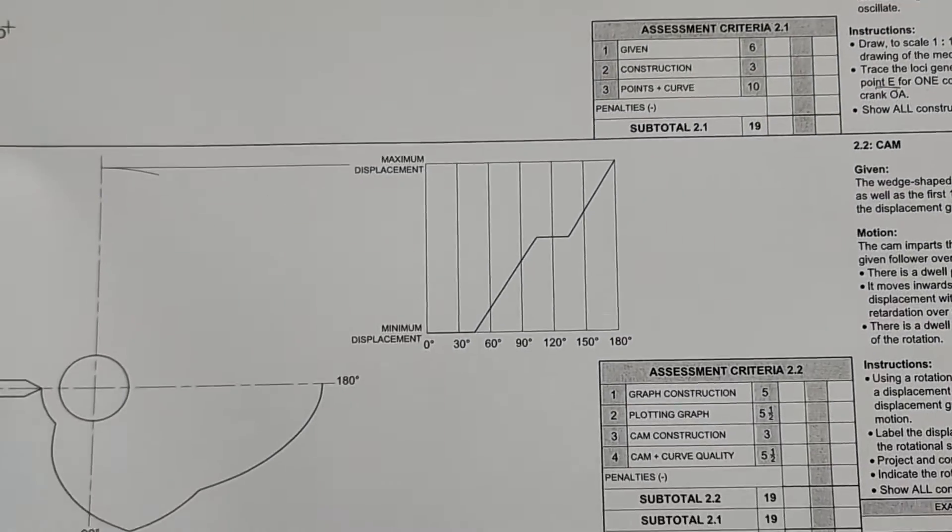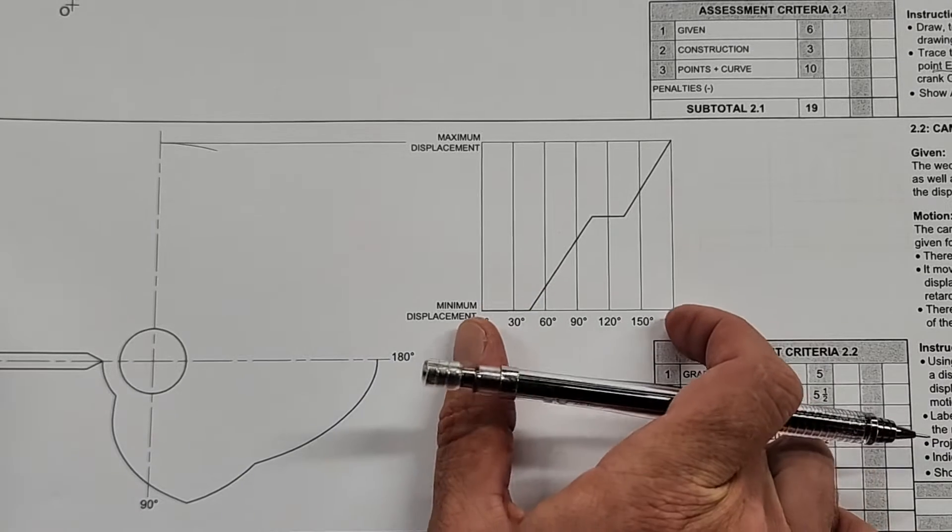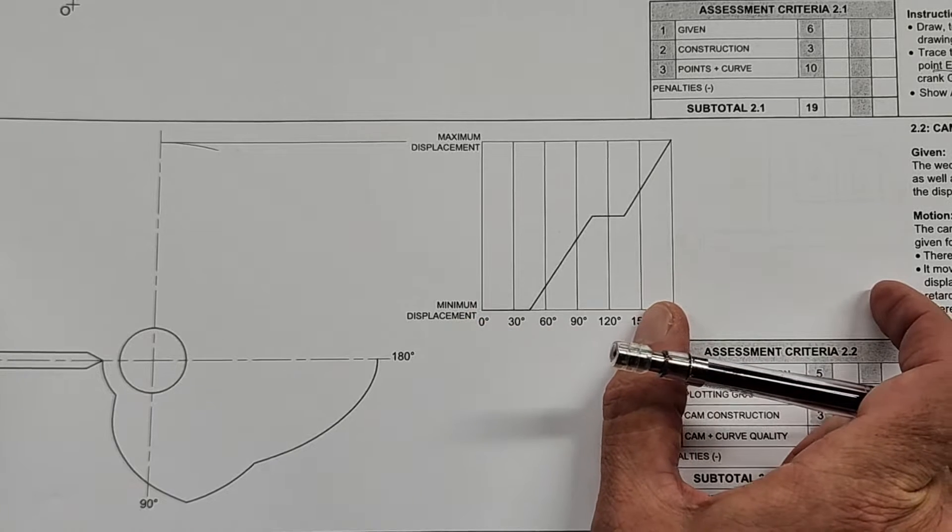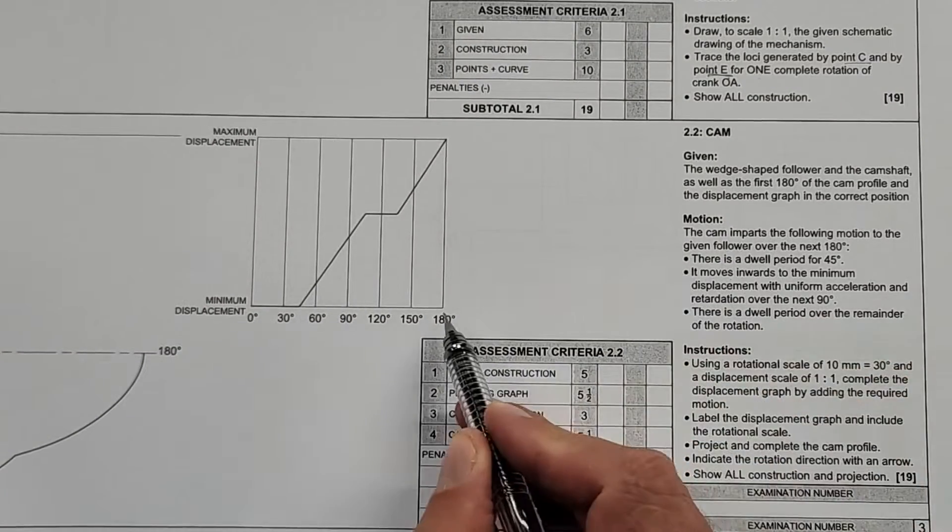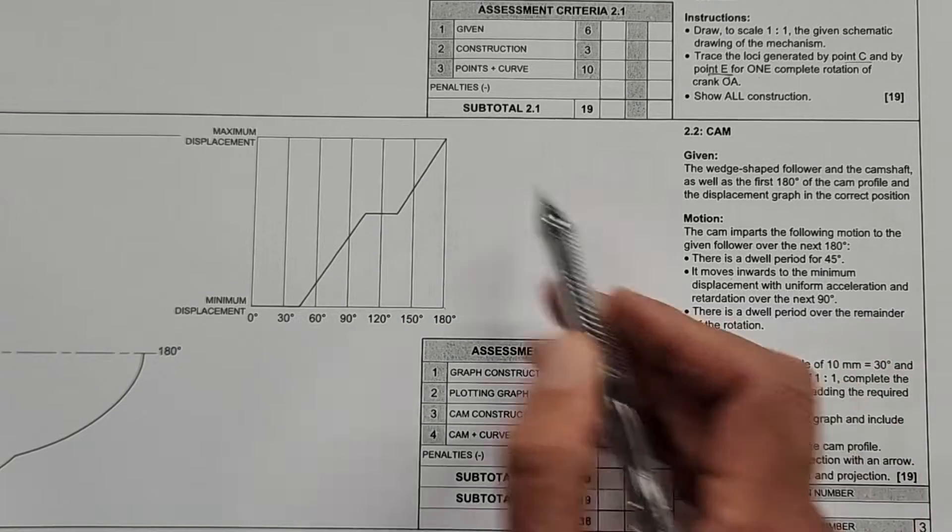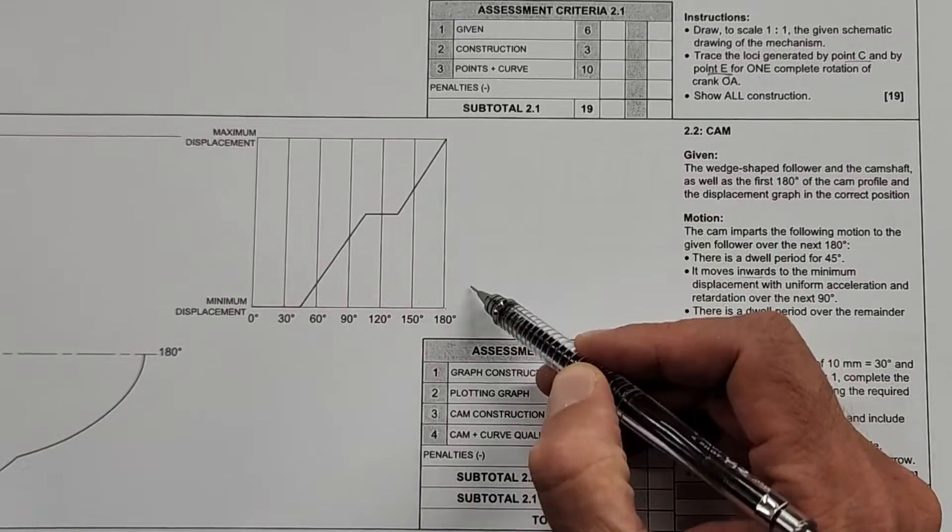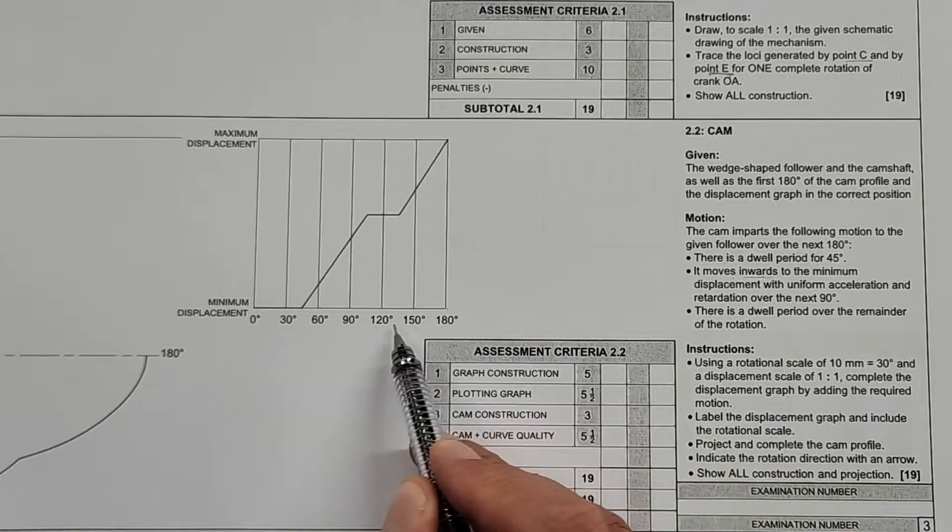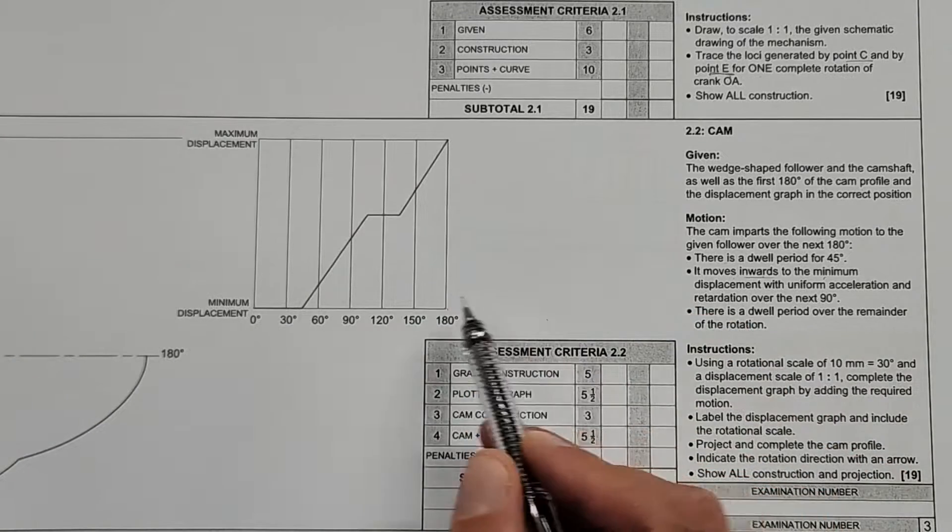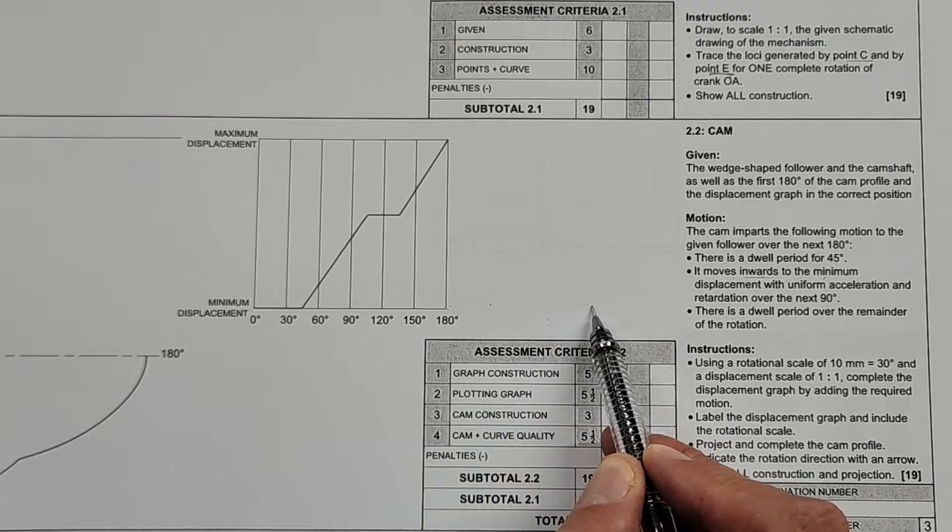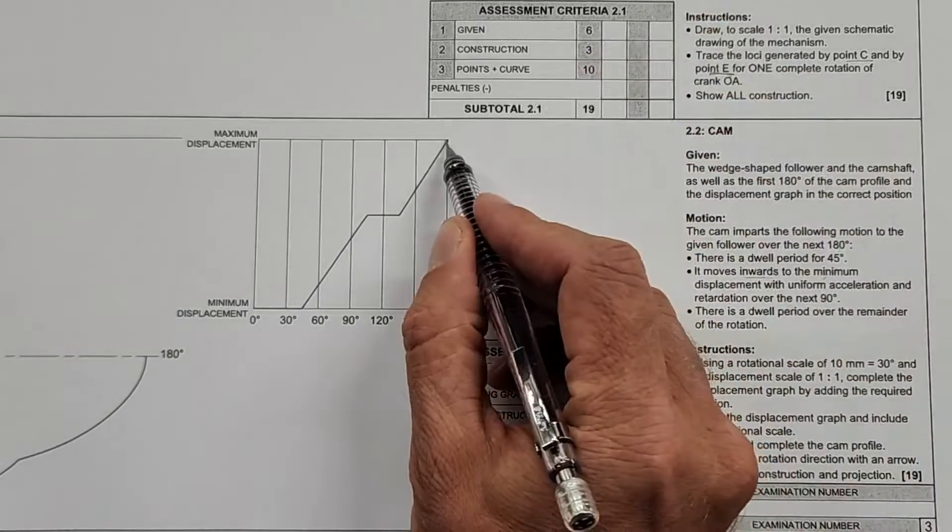The second question, if you read it very carefully, it says here that what is given to us is only the first 180 degrees of this displacement graph. The following 180 degrees, you would have had to determine yourself based on the information that's given to you. And then they give you the fact of past this point here, there is a dwell for 45 degrees, so another 45 degrees. And then it moves down of inward. They use the word inward, that might have thrown some of you, but it's actually just returning to the starting position, which is on this line. So it moves inward to the minimum displacement with uniform acceleration and retardation. So, the minimum displacement is going to be all the way to the down here. So it would have been that 45 plus another 90 degrees.